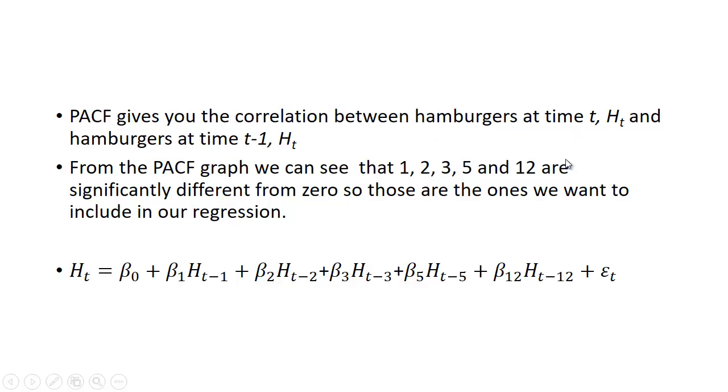So here we're going to formulate the model. We have the demand or the amount of hamburgers at time period t, we'll call H_t, and we're going to try and relate it to past values t-1, t-2, etc. So from that partial autocorrelation function we can see that 1, 2, 3, 5, and 12 are significantly different from zero. It could be less, could be more, could be just one—could be just an AR(1) model, could be an AR(2) model. Here we happen to have five different lag variables.